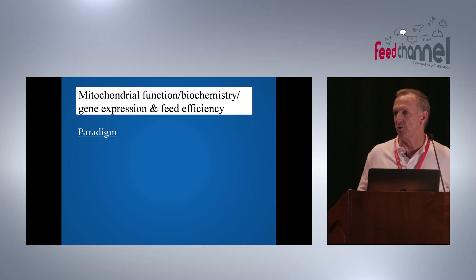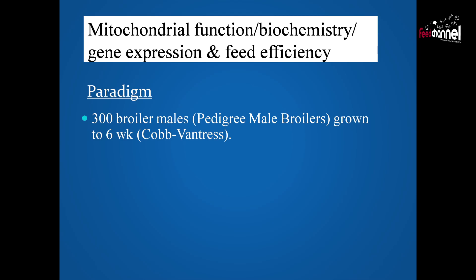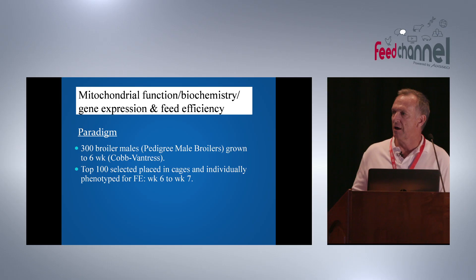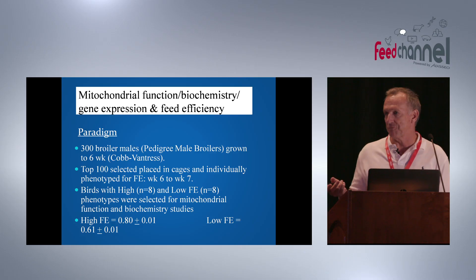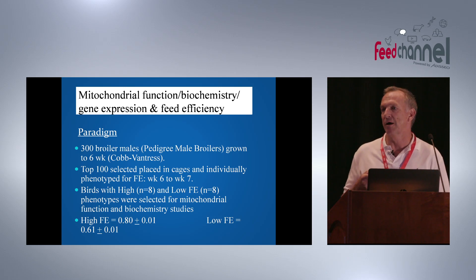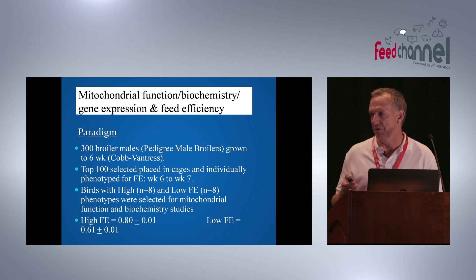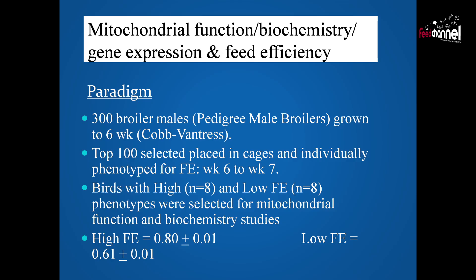Here's a quick paradigm from our work on feed efficiency, done in conjunction with Cobb-Vantress in a pedigree male broiler line. At six weeks of age, 100 birds were placed in individual cages for individual phenotyping. We took the top eight and bottom eight — that's basically what we've been using in our studies. There's a big difference in feed efficiency: 0.8 in the high feed-efficient group and 0.61 in the low feed-efficient group — a very large difference.